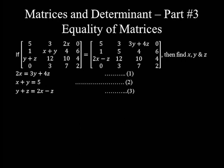Now that we have the three equations, let's rewrite them to reduce from three variables to two and solve simultaneously. Equation 2 contains only two variables, so it's simple to write one variable in terms of the other. Let's write Y in terms of X: taking X to the right side gives Y equal to 5 minus X. Remember, a positive term becomes negative when moved to the opposite side of the equality.